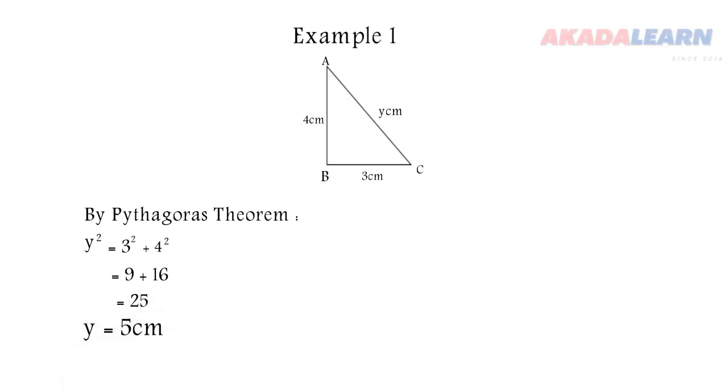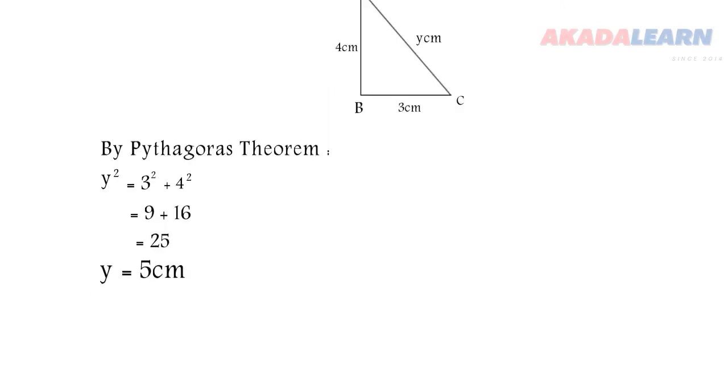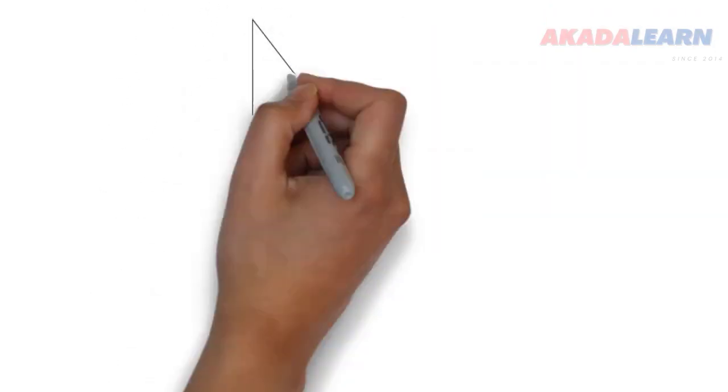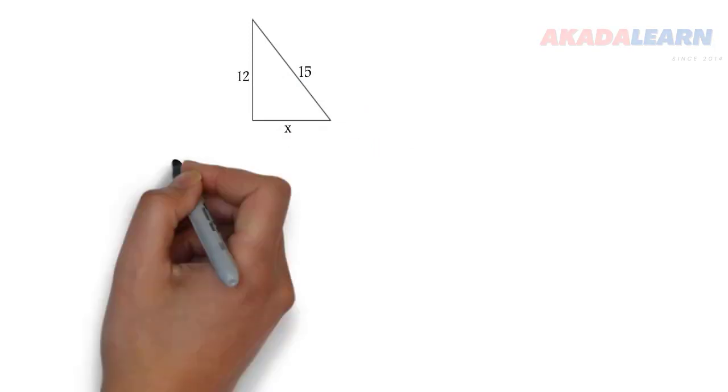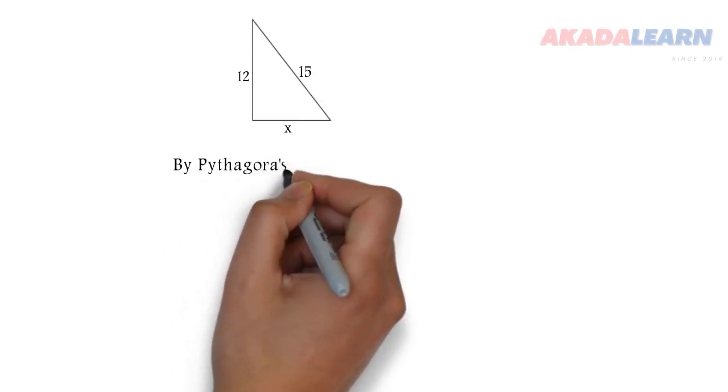Let's see another one. The hypotenuse is 15 this time around, while the other side is 12. We want to look for side x. We are still going to apply Pythagoras' theorem here.